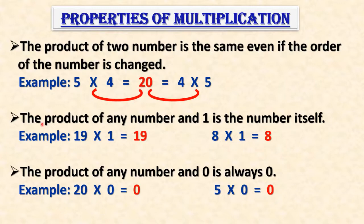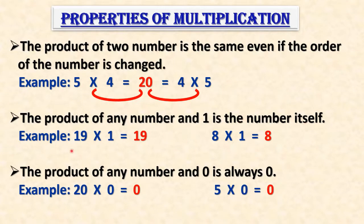The next property: the product of any number and one is the number itself. That means if any number is multiplied by one, the product will always be the number itself. For example, 19 multiplied by 1 is equal to 19, and 8 multiplied by 1 is equal to 8. Whatever number is multiplied by one, the answer will be the number itself.